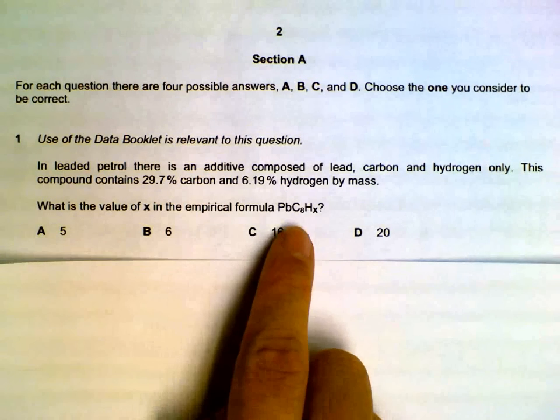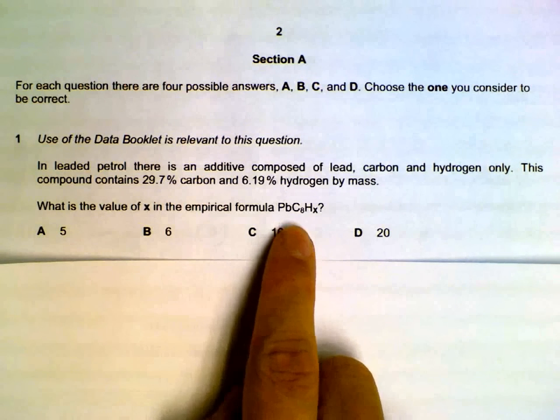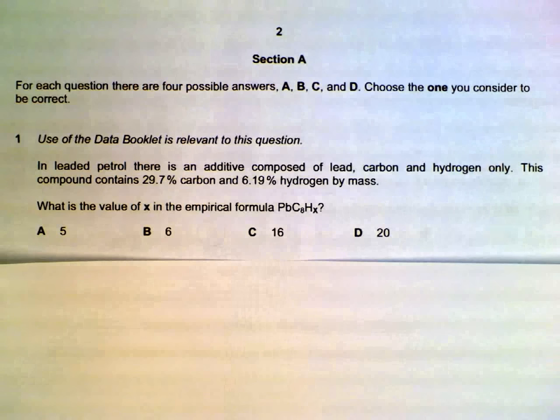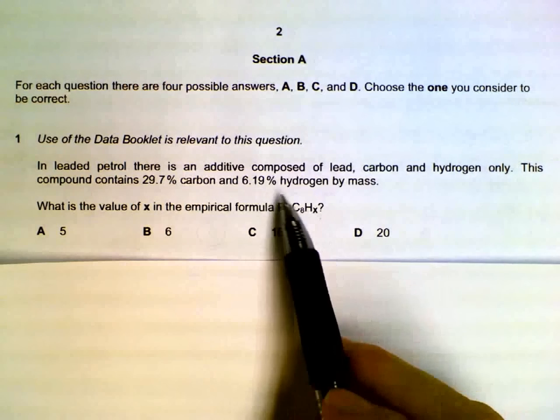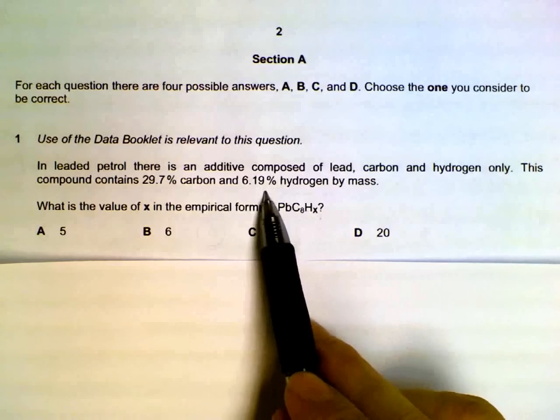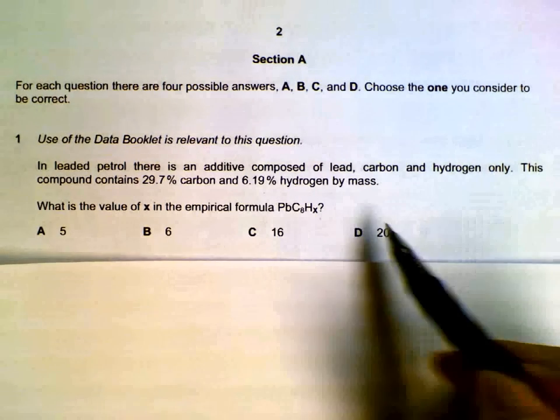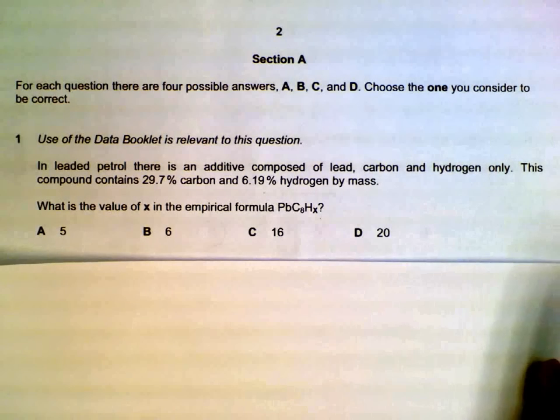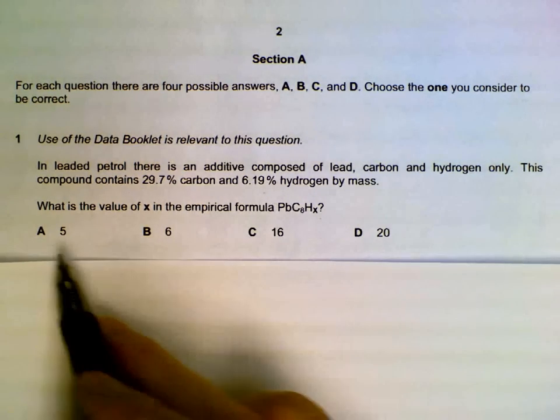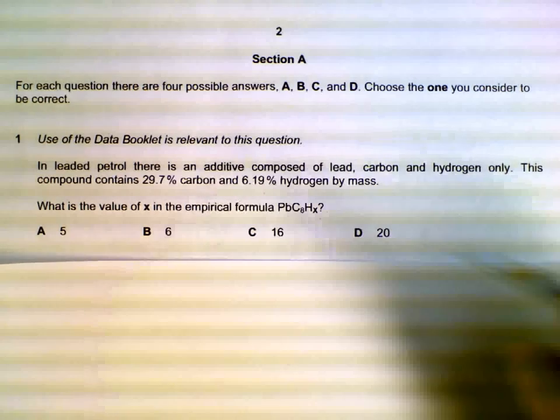Number one, we have this compound with lead, carbon, and hydrogen, and we have to find out how much hydrogen we actually need so that we have a percentage of 6.19 percent. Now you can do your empirical formula approach and all that, but there's another way to do it if you want.